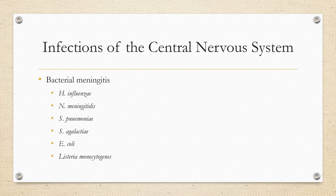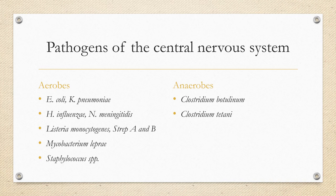Organisms that can cause central nervous system infections include Haemophilus influenzae, Neisseria meningitidis, Streptococcus pneumoniae, Streptococcus agalactiae (Group B Strep), Escherichia coli, and Listeria monocytogenes. Aerobic CNS pathogens also include Klebsiella pneumoniae, Mycobacterium leprae, and Staphylococcus species. Anaerobes that can cause CNS infections include Clostridium botulinum and Clostridium tetani, which cause botulism and tetanus respectively.